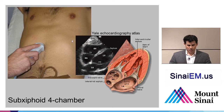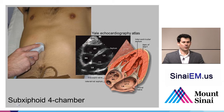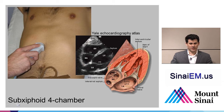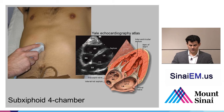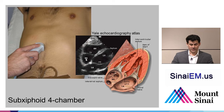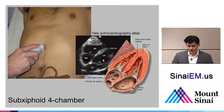We place the probe below the xiphoid process — some people forget the 'sub' part; it's not placing the probe on the xiphoid process, but beneath it, aiming through the liver to get a good view of the heart. We will see an image of the liver towards the top of the screen, the right ventricle beneath that, and the left ventricle still beneath that. The right atrium feeds into the right ventricle, and the left atrium feeds into the left ventricle, down towards the posterior aspect of the screen.